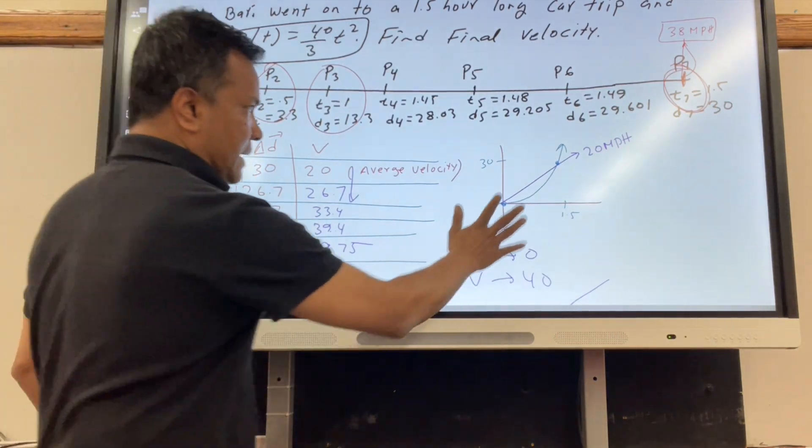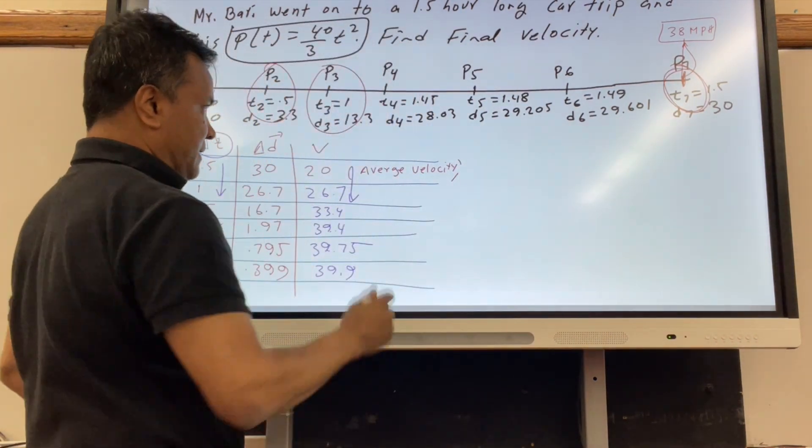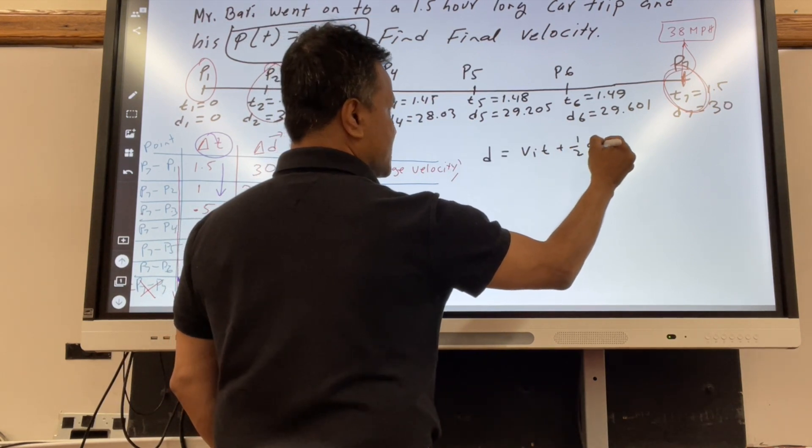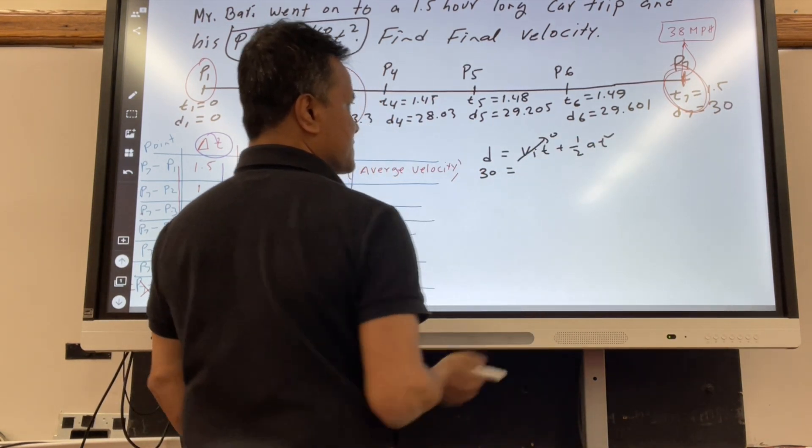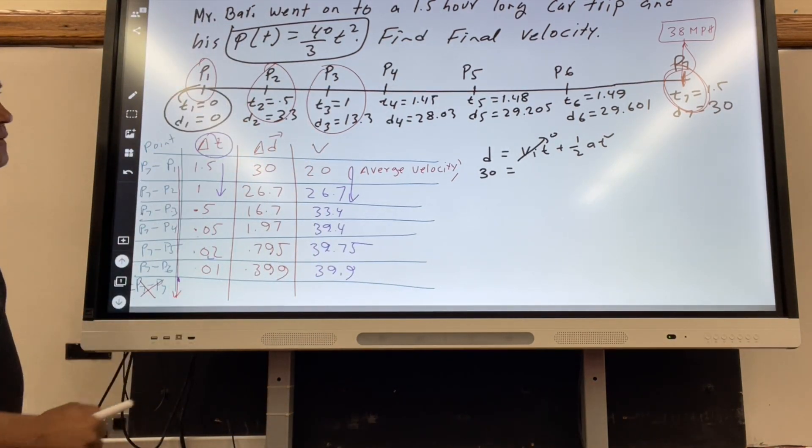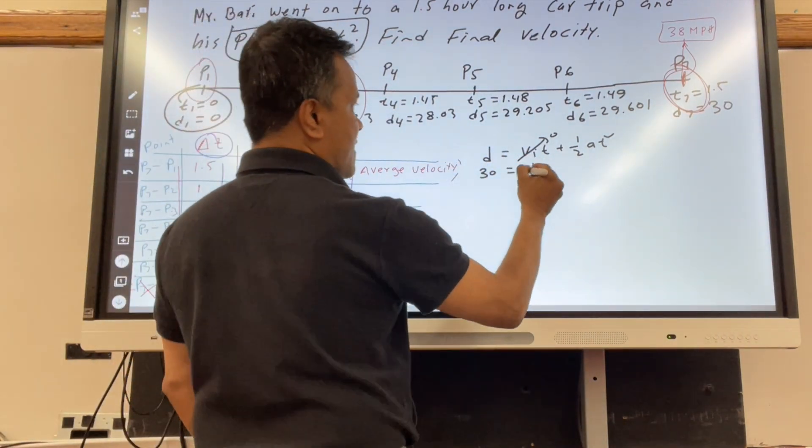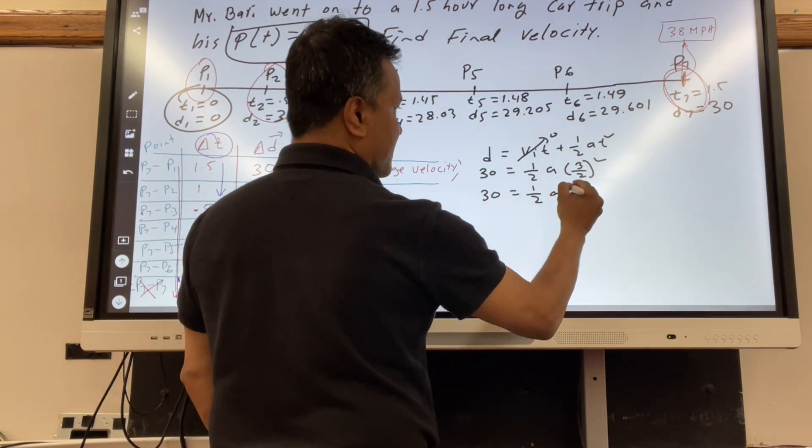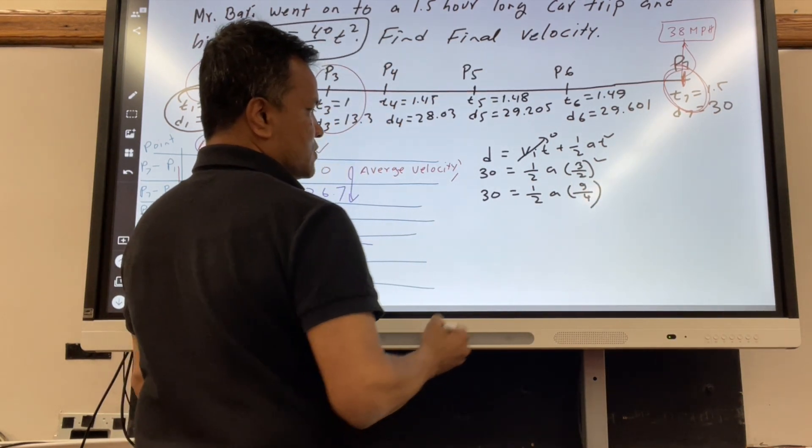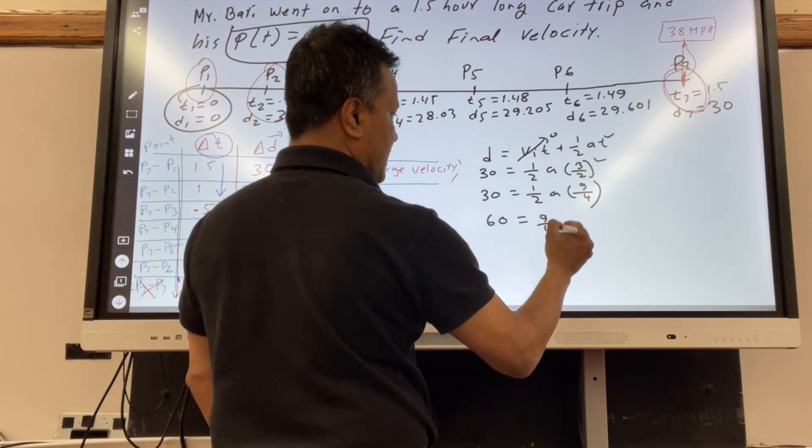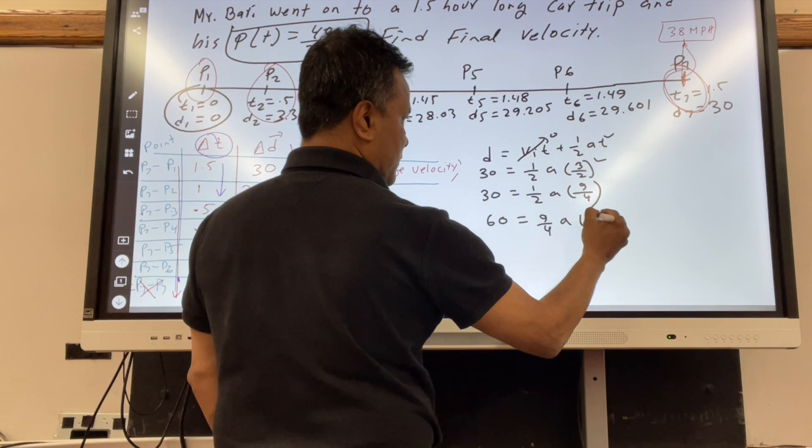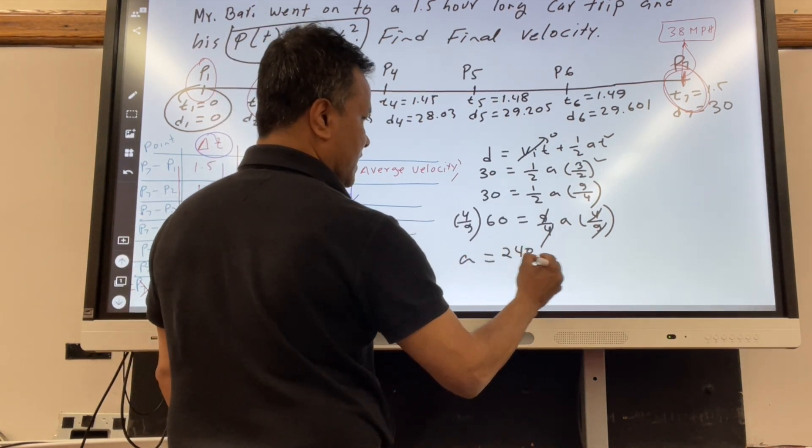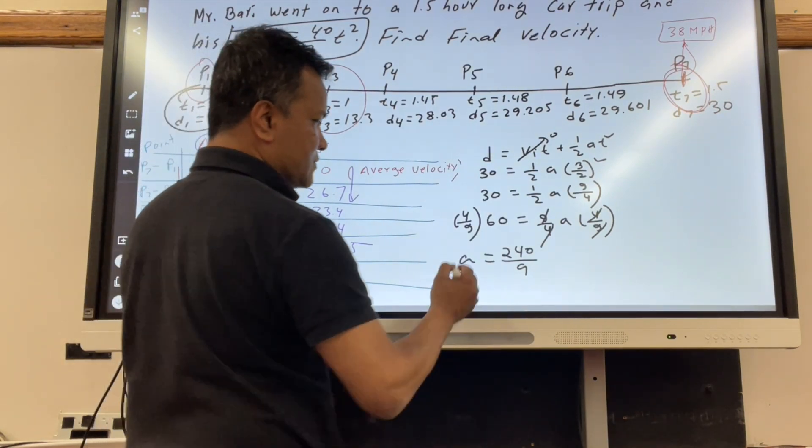Now, physics also tells us the same thing. We're going to use the distance formula. The distance is V_i times t plus half A t squared. So 30 equals 0 because you start at 0, plus half A times 3 over 2 squared. So 30 equals half A times 9 over 4. You have 60 equals 9 over 4 A. Multiply by 4 over 9, and A equals 240 over 9. This is our acceleration.